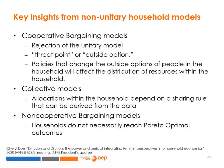A unitary household assumes that households act like one individual — everyone either has the same preferences or a single individual acts like a dictator and imposes his or her preferences. The main insight from cooperative bargaining models is that the options available to people outside the household will affect the distribution of resources within the household. The main insight from collective models is that allocations within the household depend on a sharing rule — an agreed-upon way that household members allocate expenditure — and this sharing rule can be derived from the data.